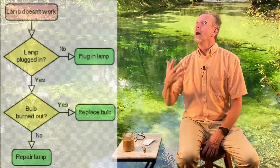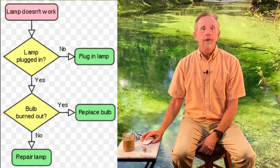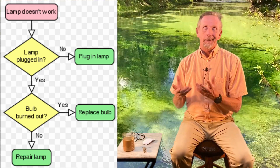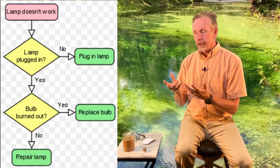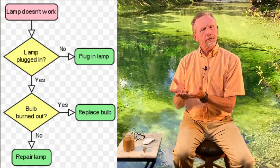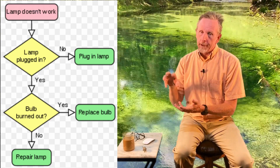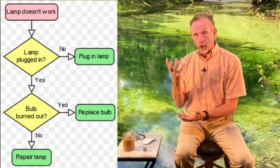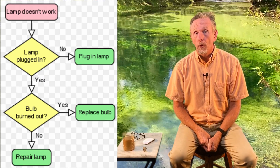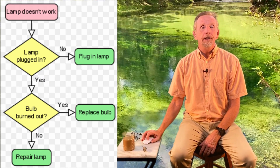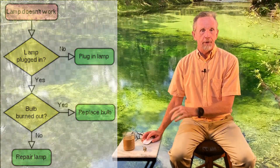A flow chart uses little boxes to show what to do in each situation. For example, I look at my lamp — it doesn't work. Is it plugged in? No — plug it in and the lamp works. It's plugged in but still not working? Is the bulb burned out? Check the bulb — if it's burned out, replace it and it works. If the bulb is good, now I have to go into a more complex flow chart to repair the lamp. We use these all the time to show: in this situation, I do this, then this, then this.